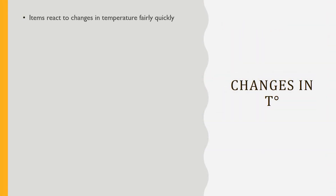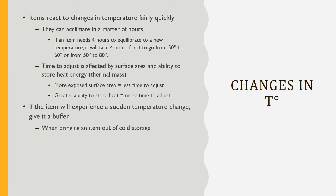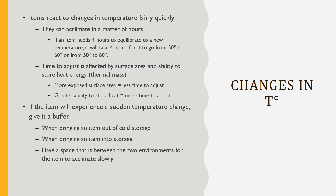When it comes to changes in temperature, objects react fairly quickly and can acclimate in a matter of hours. The adjustment period is determined by the amount of exposed surface area and the object's ability to store heat. More exposed surface area means less time to adjust, and a greater ability to hold heat means more time to adjust. If there is a planned venue or environment change, it helps to give the item a buffer to let it adjust more slowly — for example, when bringing something out of cold storage or putting it back in. Having an intermediate space allows the object to acclimate before it gets moved to its final destination. Housing is another good buffer since it provides a layer around the item and reduces the amount of exposed surface area.